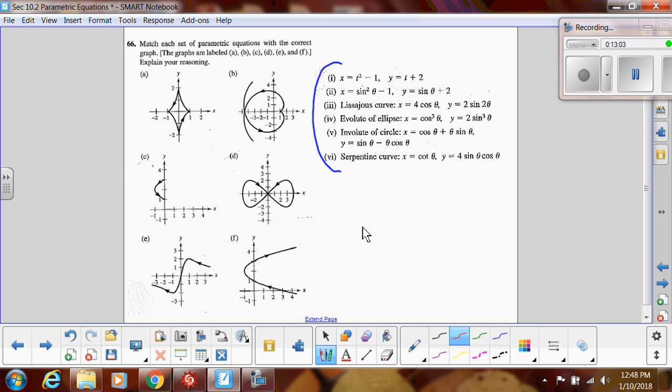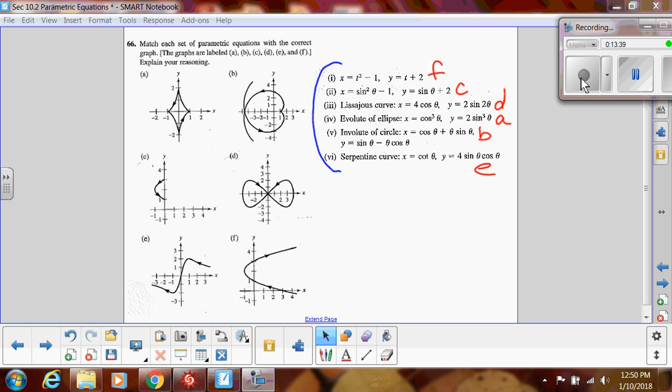All right, so by now you've had a chance to look at it. Here are the correct answers just so you can check yourself. So the first one is F, number two is C, number three is D, four is A, five is B, and six is E. So now let's talk about some of the whys behind this. Actually, what I'd like to do is talk about the parameter. Notice that this isn't time, this is theta. So our parameter is really the angle. So just keep that in mind. So that's what we're really looking at.